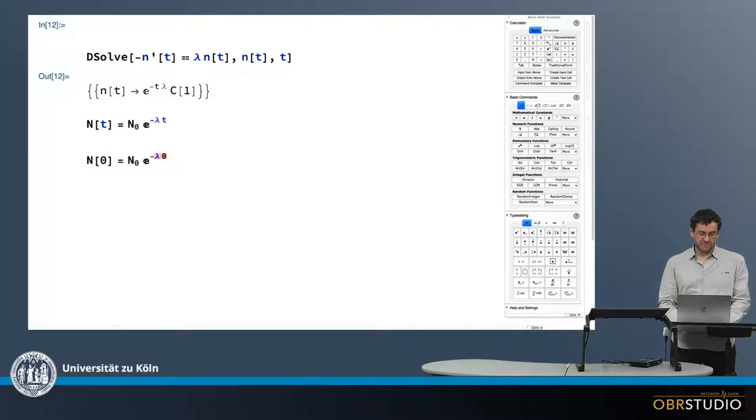minus lambda is zero, and e to zero is one, which means at n zero, we have n zero. So this is all correct.